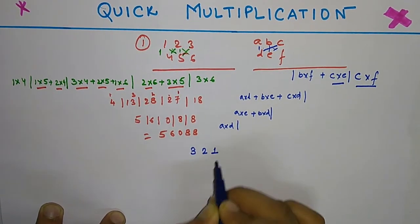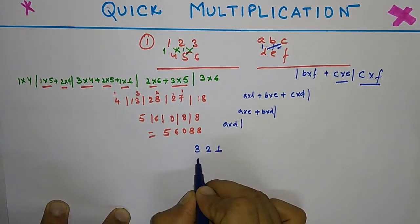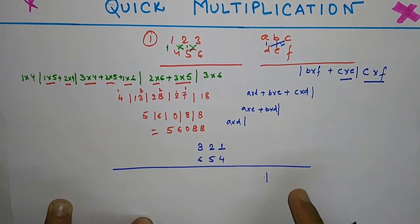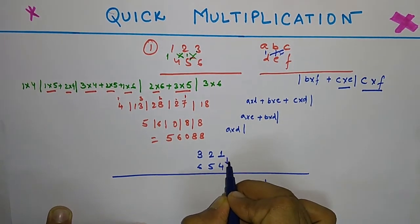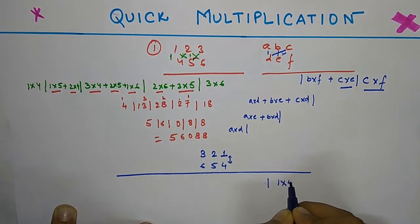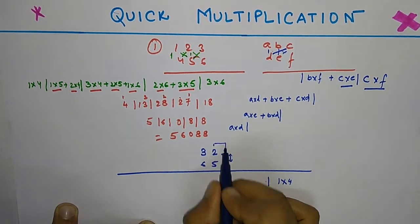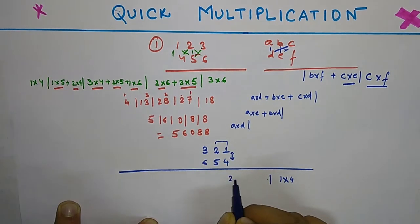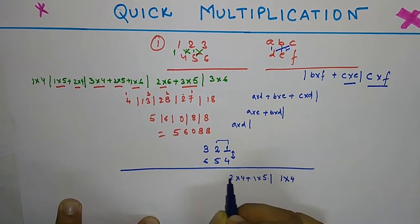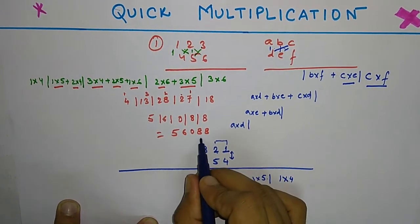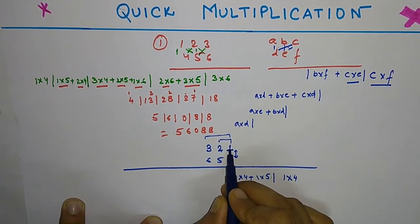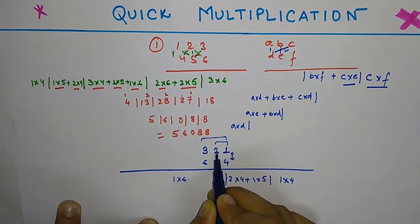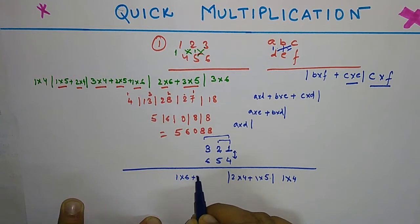We will have one more example: 321 and just invert it, will be 654. So you see, the rightmost block will be multiplication of these two: that is 1 into 4. Then take these two blocks, multiplied crosswise and added: 2 times 4 and 1 times 5. Then we are going to take these three parts. So we have multiplied 1 by 4, 1 by 5, so 1 will multiply to 6 now. 2 has been multiplied to 4, now 2 will be multiplied to 5, and 3 will be multiplied to 4.